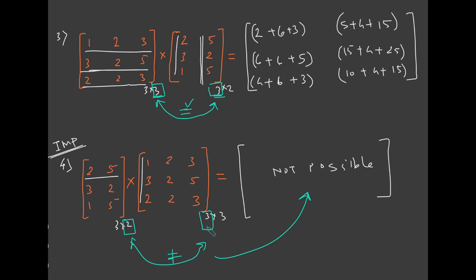Also remember that once the inner dimensions match — like 3 and 3 — the resultant matrix will always have size equal to the outer dimensions. In this previous compatible case, the result was 3 cross 2: the number of rows of the first matrix by the number of columns of the second matrix. So now let's do some more questions to make these things clearer.